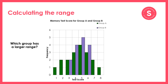Calculating the range is really straightforward. You take the largest number in the data set and then minus the smallest number from it. In this bar chart you can see test scores at the bottom and the frequency at which those scores occurred, for two different groups — group A and group B. Let's think about how we calculate the range for the green bars and the purple bars, and understand which group has a larger range. Pause the video, try to calculate the range yourself, then restart and I will walk you through it.